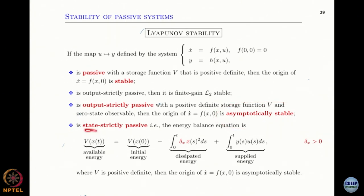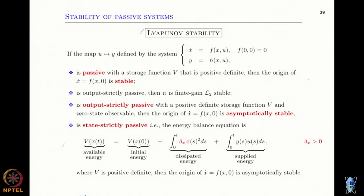If the system is state strictly passive — meaning a term appears with the whole state — then we also have asymptotic stability right away, because you could use V as a Lyapunov function, forget about the input, and you will have the derivative negative.